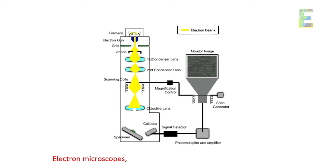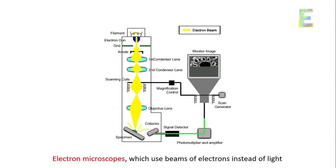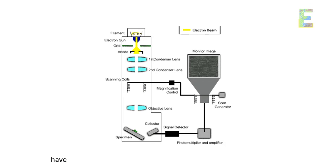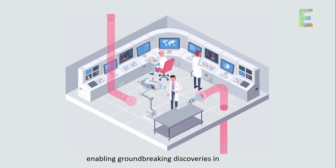Electron microscopy. Electron microscopes, which use beams of electrons instead of light, have revolutionized our ability to observe the micro and nano world, enabling groundbreaking discoveries in science.